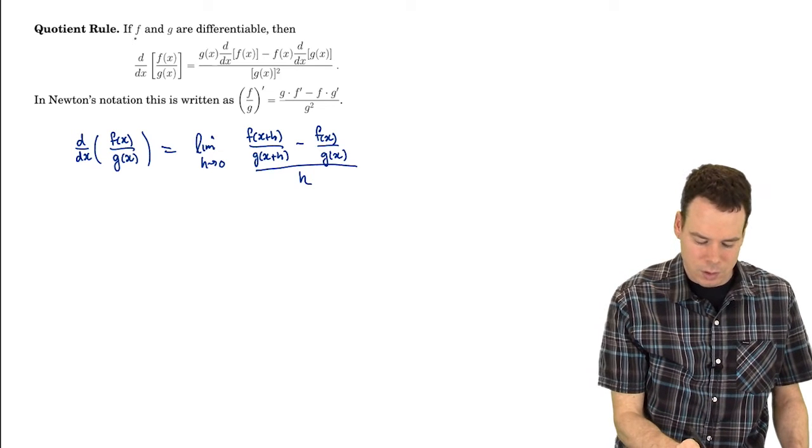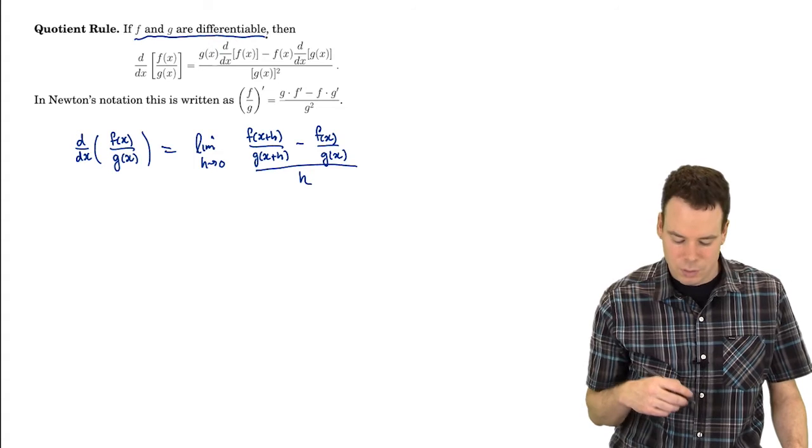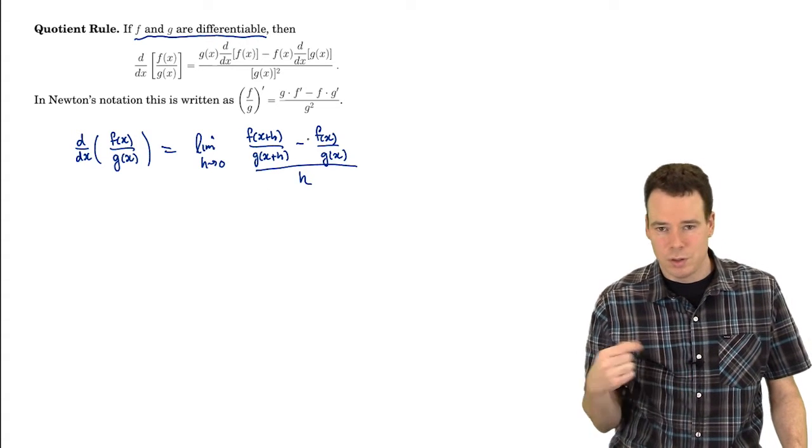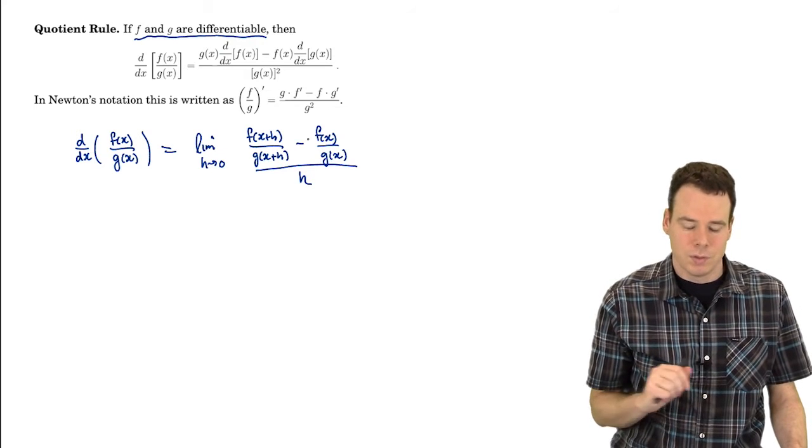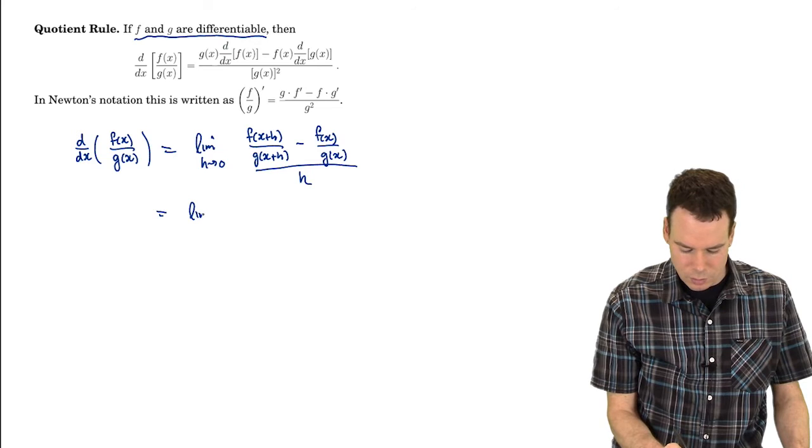The only thing I have to work with are the fact that f and g are differentiable. So the limits of this form involving just a function f and just a function g, I know their values are going to be the derivatives of the function. So I'm going to try to incorporate that in here somehow. See if I can use it to my advantage.